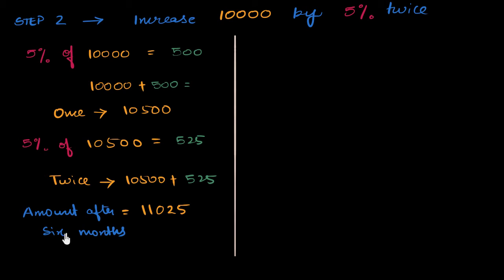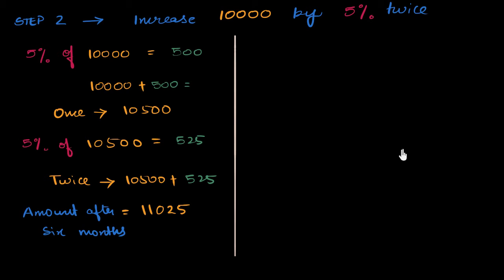Instead of six months, if you had said two years, that's eight quarters, and you'd have to do this eight times, which can get really long. If you only want the final answer without calculating all the middle answers, there's a quicker way. To understand it, let's pause and take a quick look at percentage change. We've learned this before, but let's look at it again.